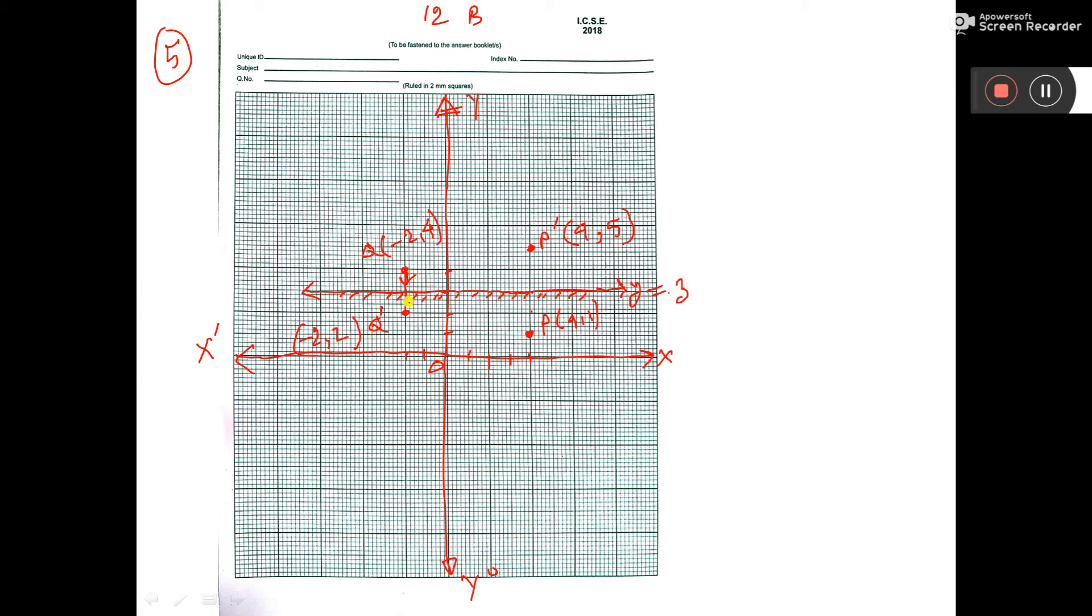And give arrow sign - it is coming in this way. And this one also, give arrow sign. P to P'. And this is the solution: we have got P' = (4, 5) and Q' = (-2, 2). These are the answers.